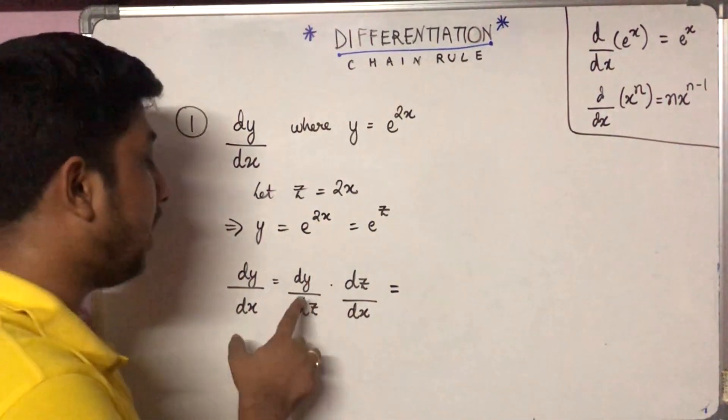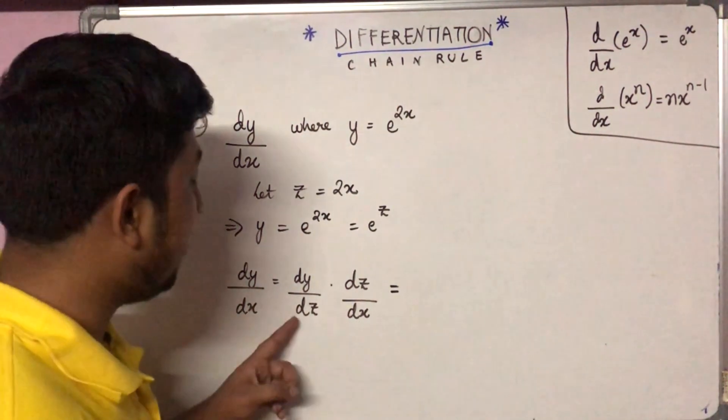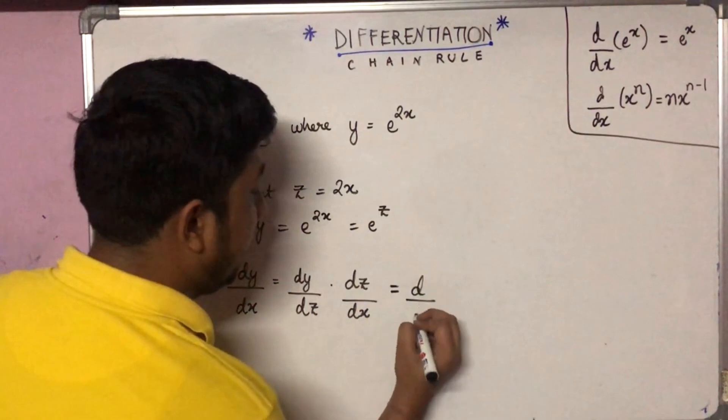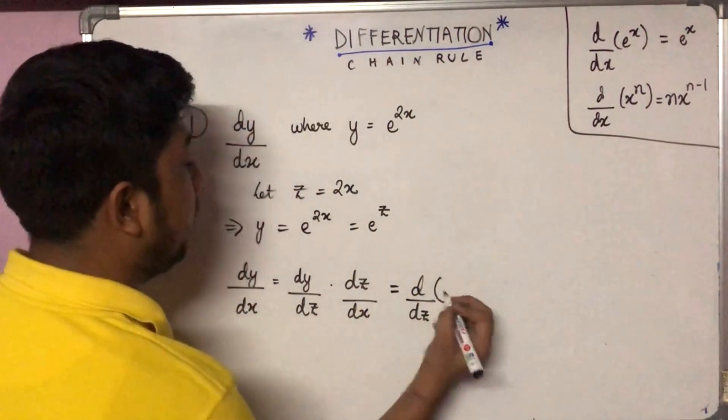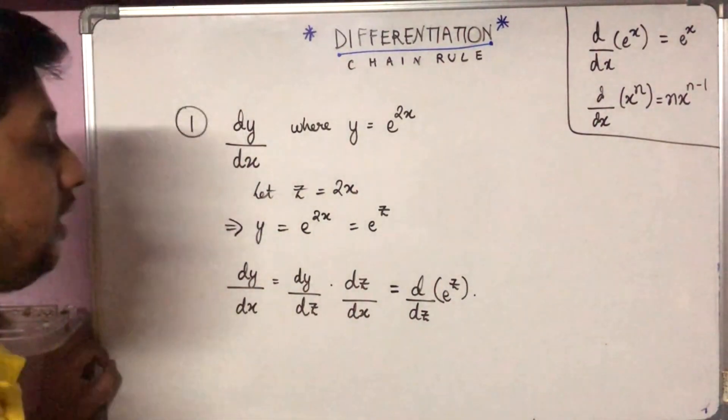Now dy by dz is equal to d/dz of y. So d/dz of y, which is equal to e to the power z, into dz by dx.